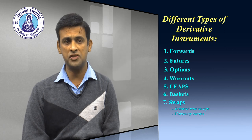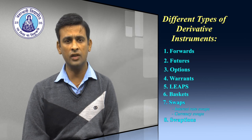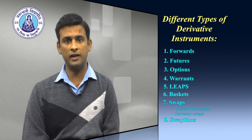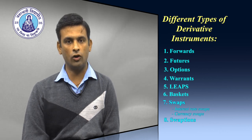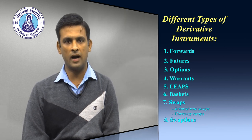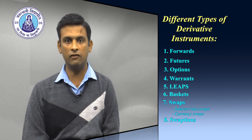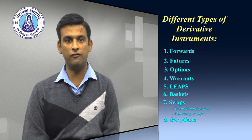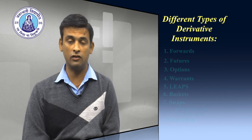The next and last type of derivative is swaptions. Swaptions are options to buy or sell a swap that will become operative at the expiry of the option. Thus a swaption is an option on the forward swap. Rather than call and put, the swaption market has receiver swaption and payer swaption. A receiver swaption is an option to receive fixed and pay floating. A payer swaption is an option to pay fixed and receive floating.